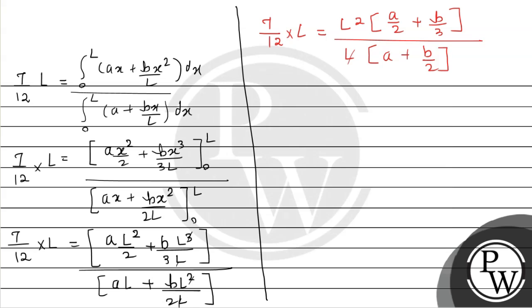L cancels. Cross multiplying with 12: 6a plus 4b. So we get 7a plus 7b by 2 equals 6a plus 4b. Simplifying: a equals 2b.